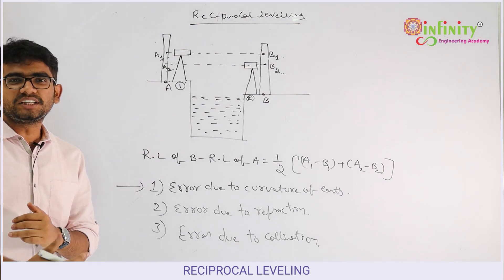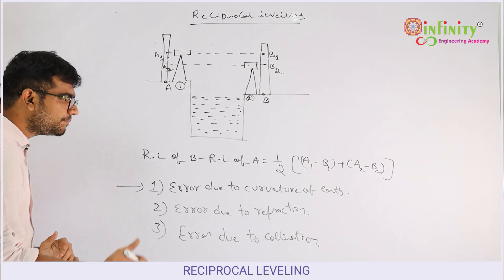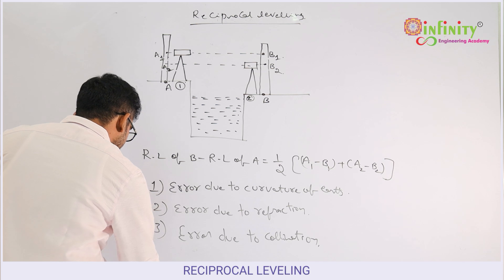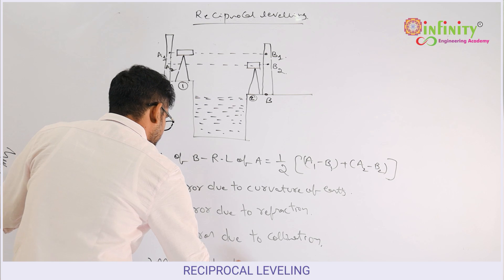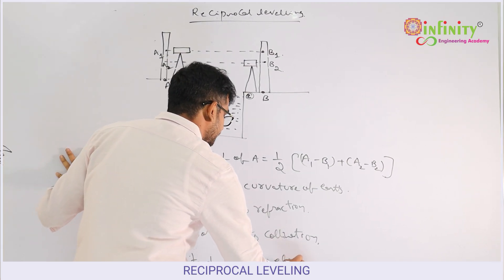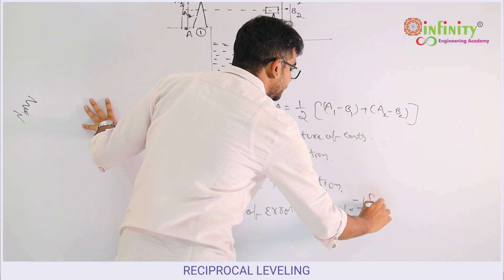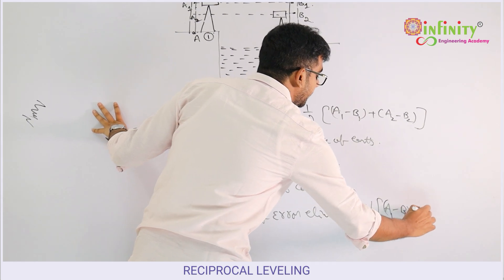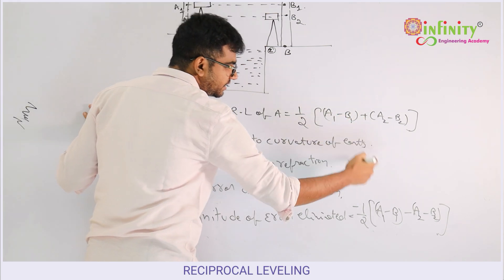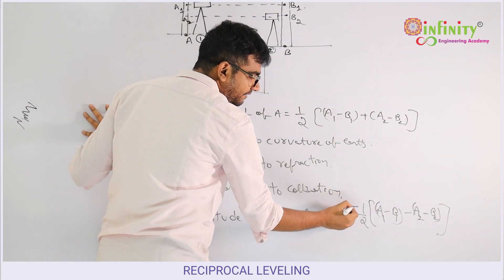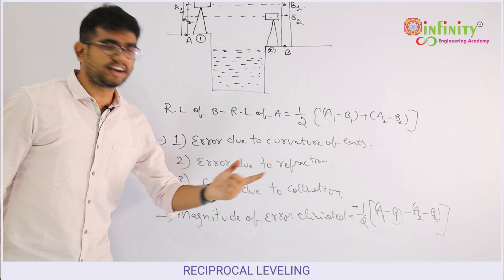The magnitude of error eliminated by reciprocal leveling is given by: magnitude of error eliminated = half into (A1 minus B1) minus (A2 minus B2). With a minus sign in that position, you will get the magnitude of the error eliminated.